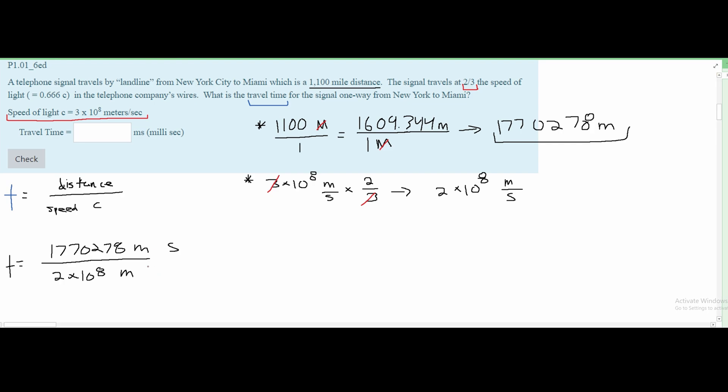So we have 1,770,278 divided by 2 × 10^8. After we do this, we get that our time value, or t, equals 0.00885 seconds.